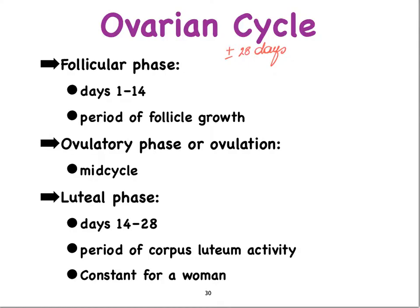In a 28-day cycle, the luteal phase typically tends to be the last two weeks, although this can vary. If it varies, it doesn't vary within the same woman. A particular woman will tend to have the same length of luteal phase — even though her luteal phase might only be 12 days or it might be 15 days — it tends to be consistent with each one of her cycles.